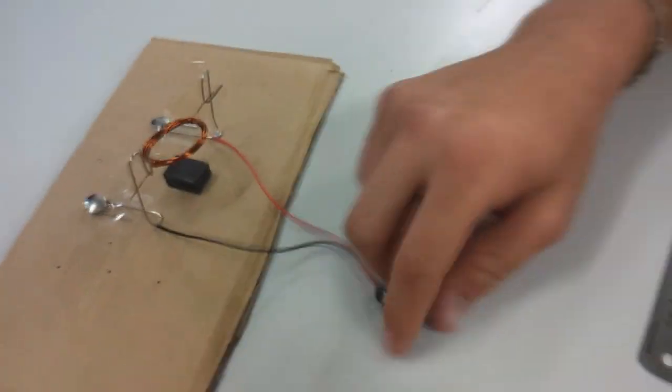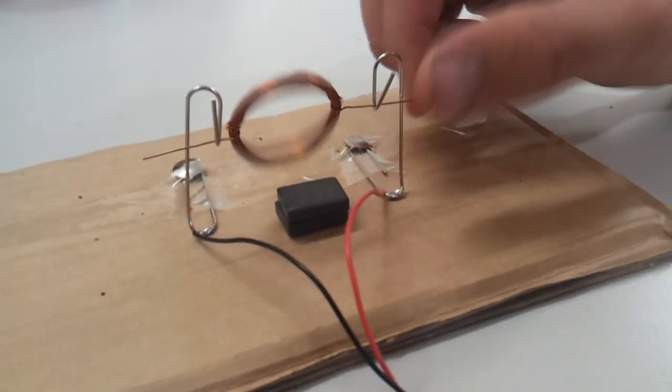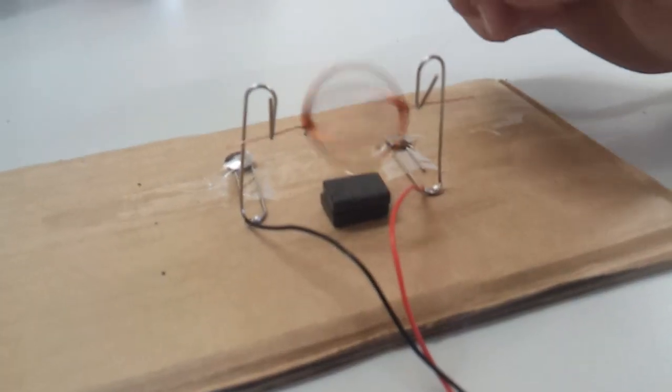Place the magnet beneath the coil armature. Connect the battery clip to the 9V battery. To start the DC motor, give the coil armature a slight spin.